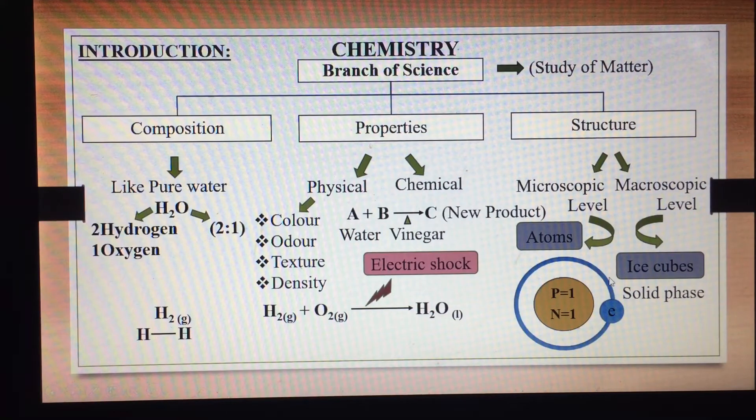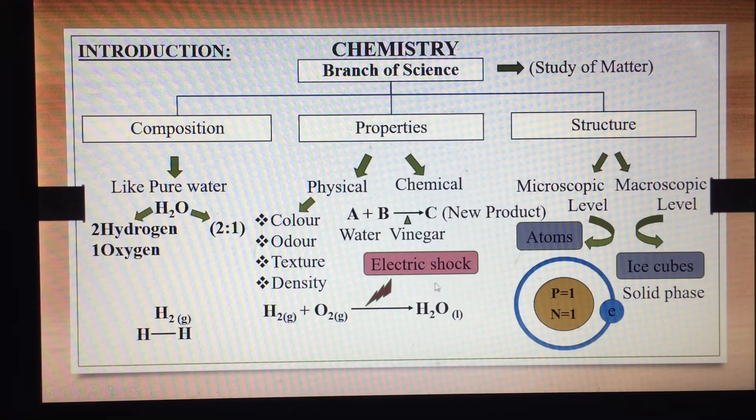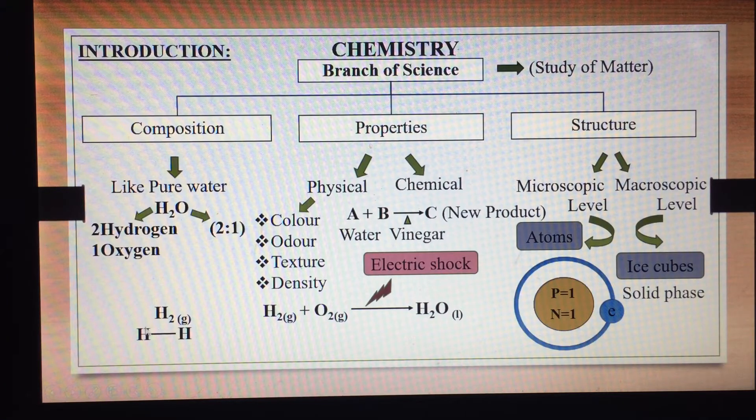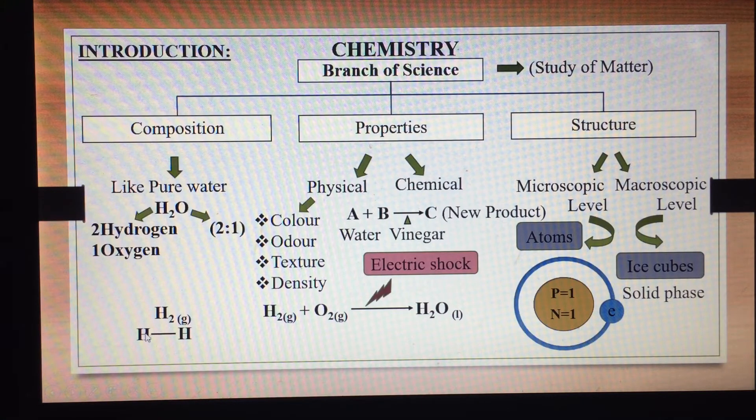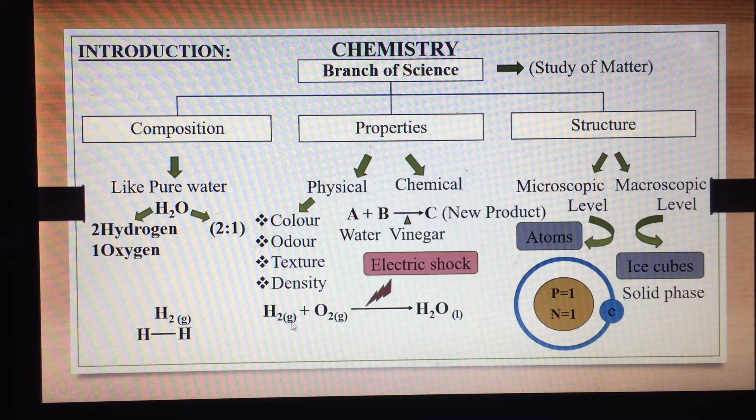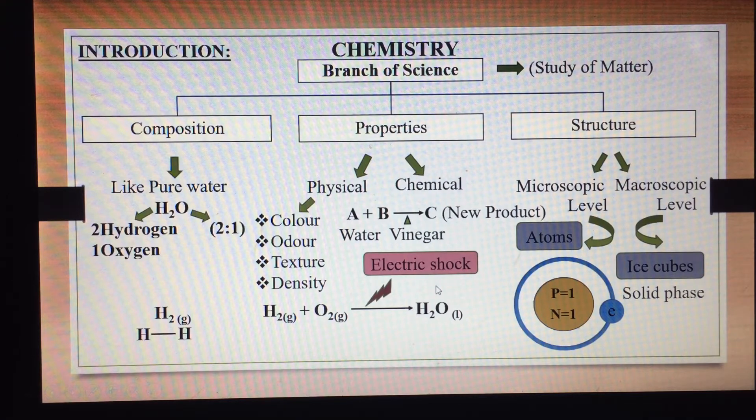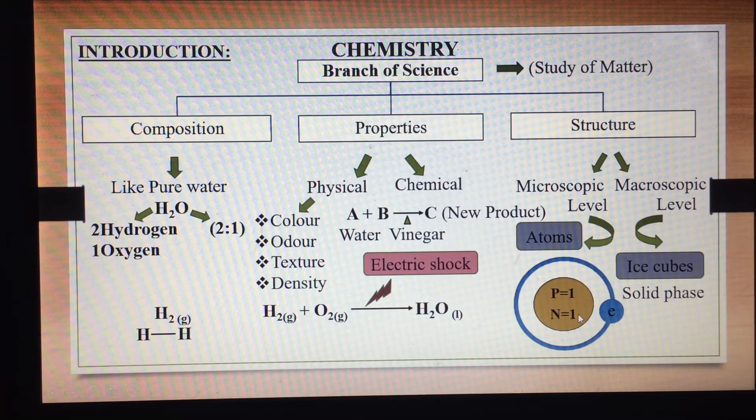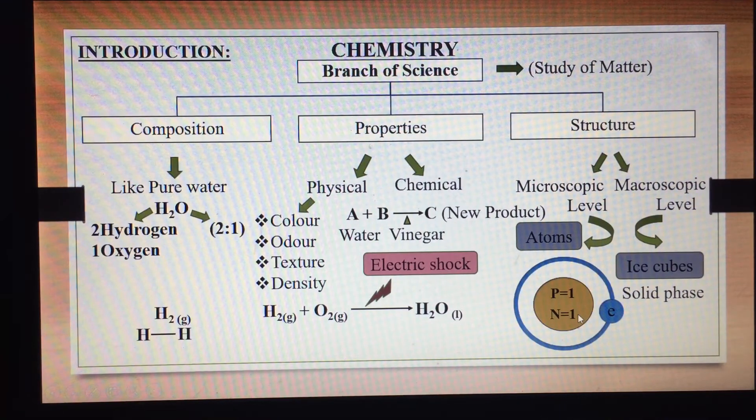If we apply all these things to a simple one element, for example Hydrogen, you can see Hydrogen formula is H2. This gas can be found in this formula. If you see the composition, there are two Hydrogens. If you see the properties, this is gas which can be found in the atmosphere. When electric shock is provided, it reacts with oxygen and they can be found in water. If you see the structure of Hydrogen, 1 electron, 1 proton and 1 neutron, this is the study of matter.